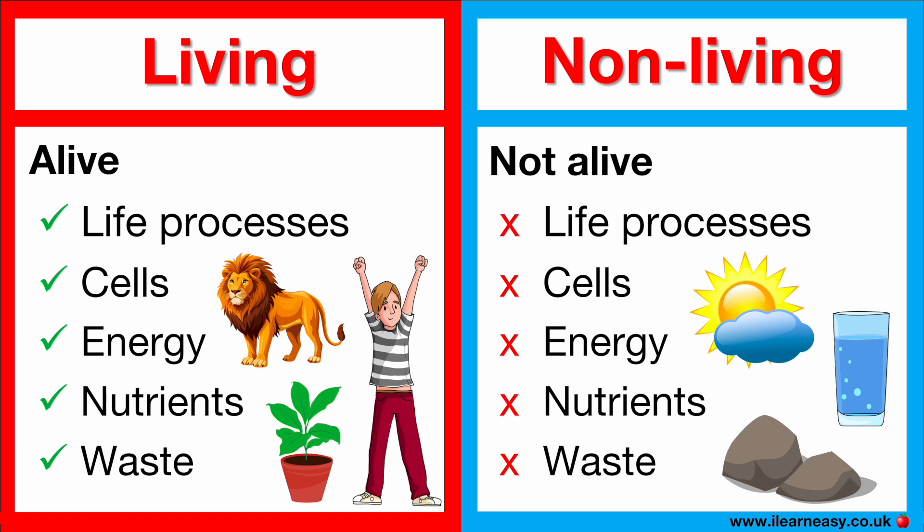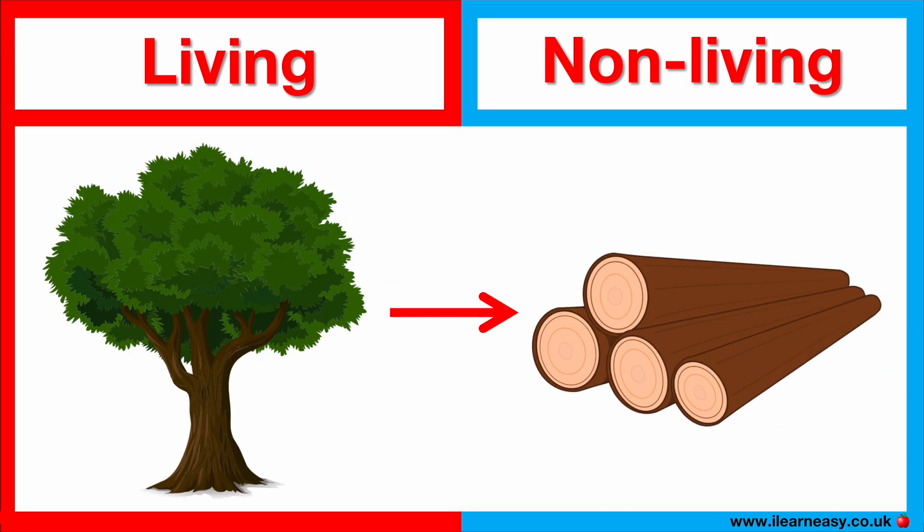In some cases, it may not be very clear whether something is living or non-living. For example, a tree. A tree is a living thing. However, the logs from a dead tree are non-living.